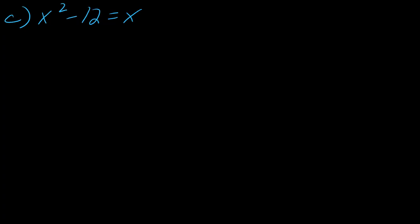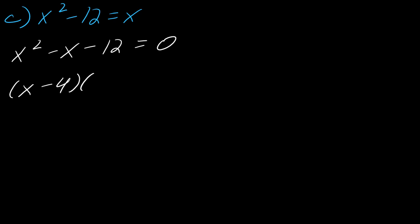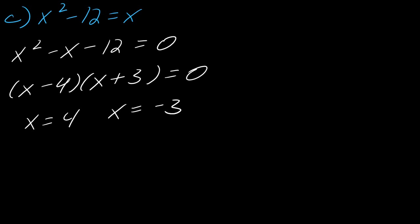For the next one, I've got x squared minus 12 equals x. In good habits, I'm going to bring everything over to one side. And now we can factor it — if we can factor, we are always going to factor it whenever we can. This gives x equals 4 and x equals negative 3. So much easier and faster.